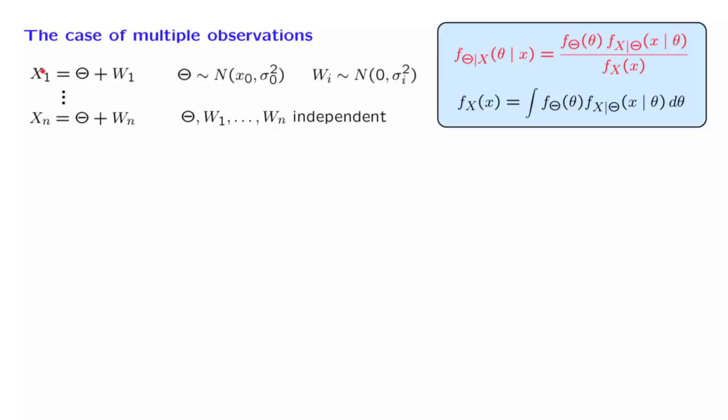So we need now to start making some progress towards calculating this term here. What is the distribution of the vector of measurements given theta? Before we move to the vector case, let us look at one of the measurements in isolation. If I tell you the value of the random variable theta, then in that universe, the random variable xi is equal to the numerical value that you gave me for theta plus wi.